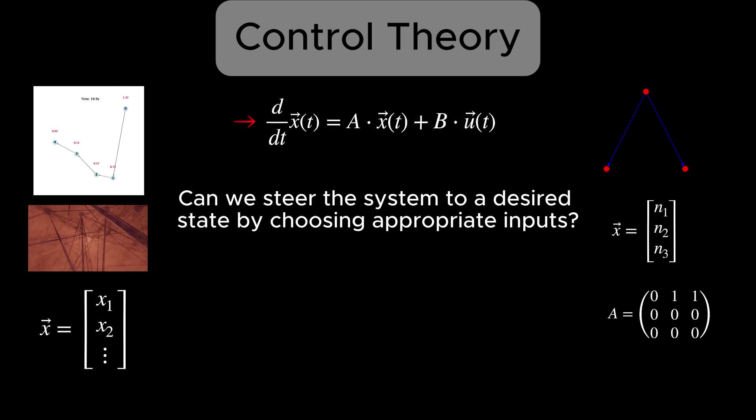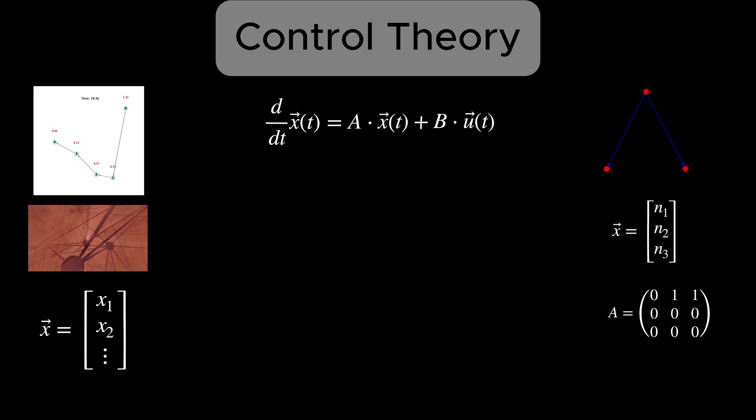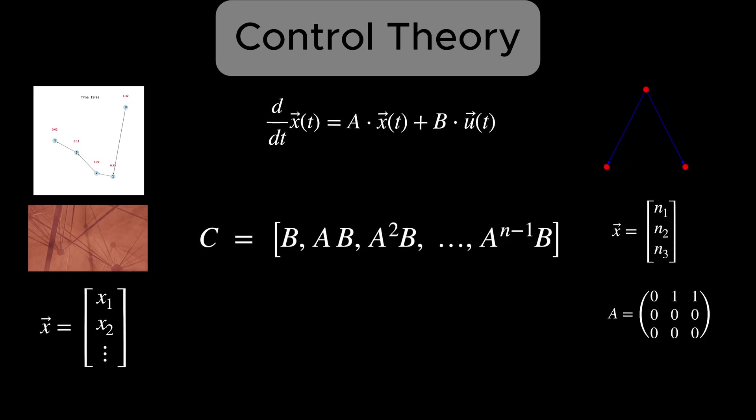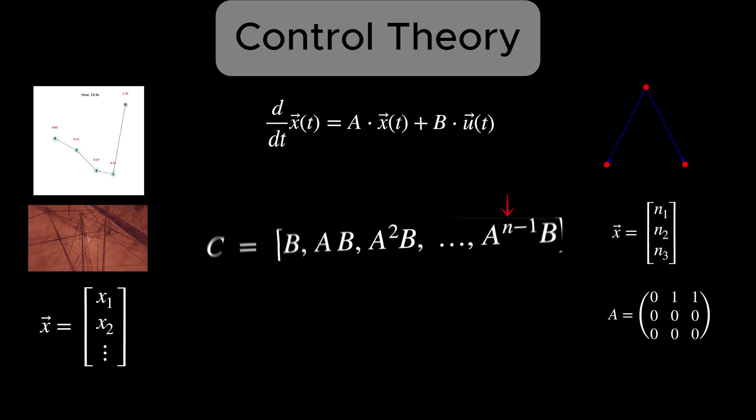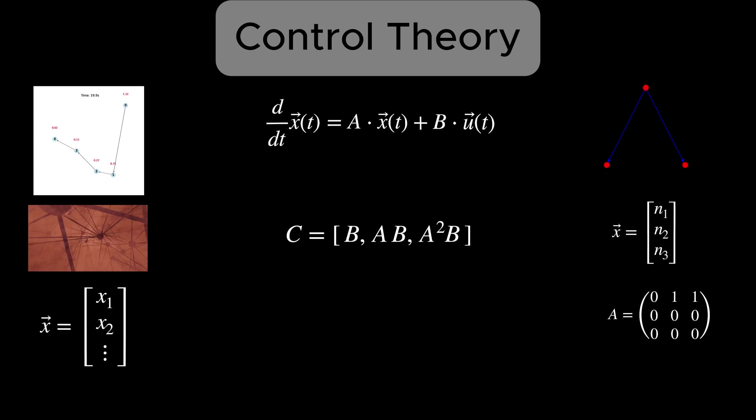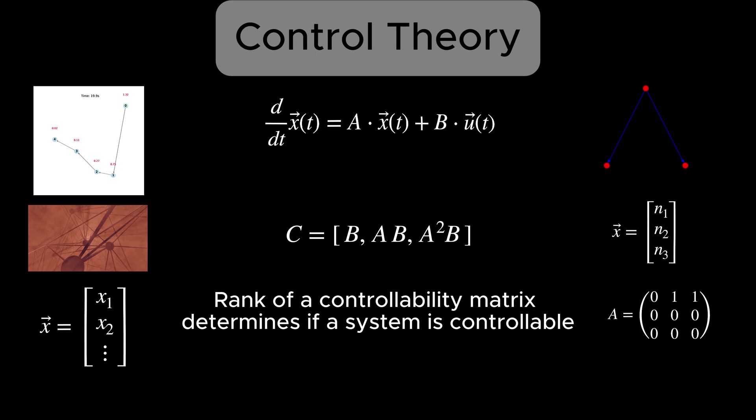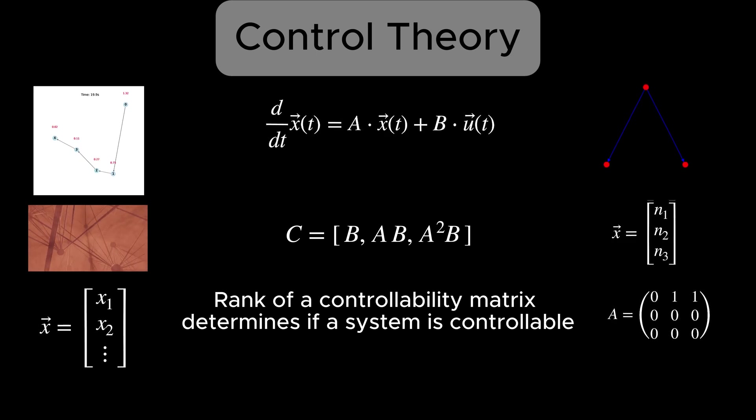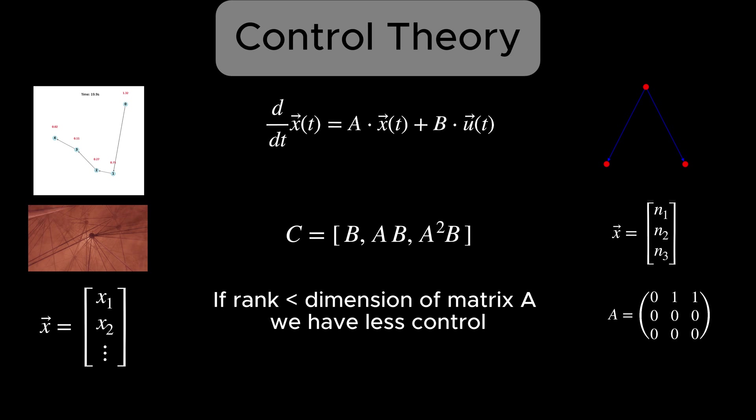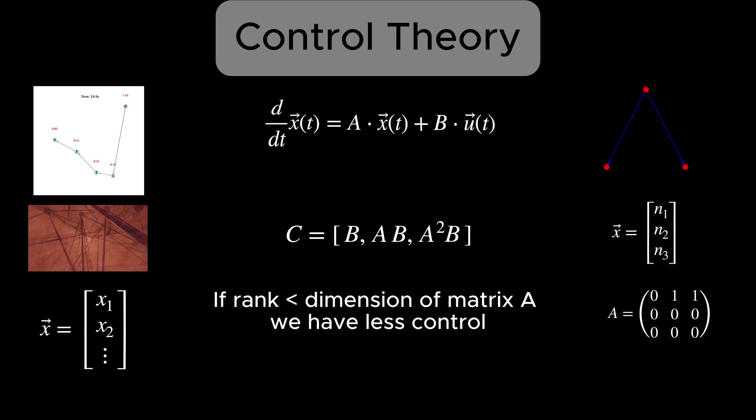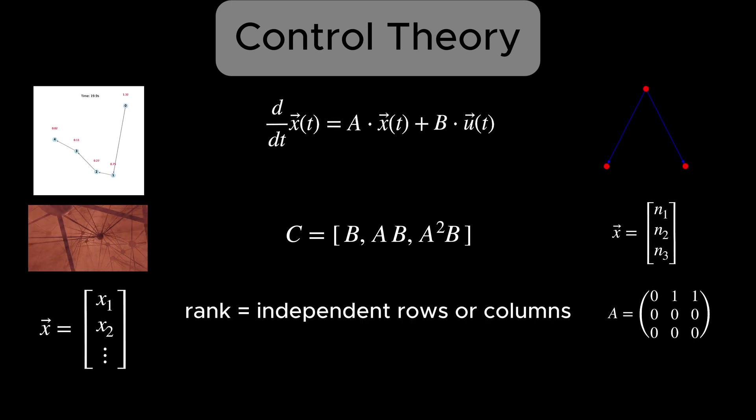In control theory, the question is, can we steer the system to a desired state by choosing appropriate inputs? The response lies in a key tool called the controllability matrix. Here, we concatenate the matrices separated by commas side by side to construct the matrix C. In our three-node case, N equals 3. So we look at the following as the matrix C. If C has full row rank, which would be 3, in our three-node system, then the system is fully controllable. In that case, we can make the activity of neurons do whatever we want. If the rank of C is less than 3, then we cannot control all of the nodes independently. If you wonder what a matrix rank is, it's the maximum number of linearly independent rows or columns in the matrix.